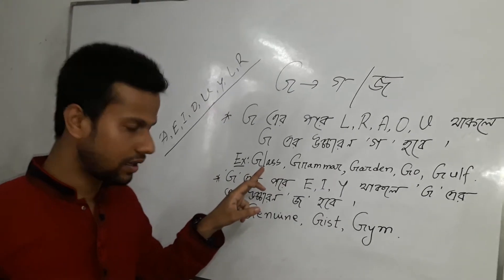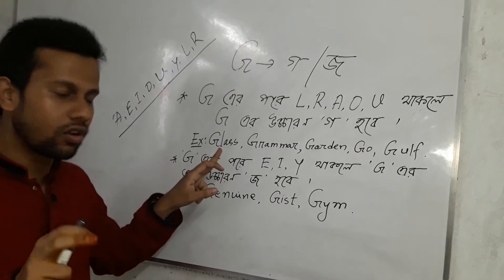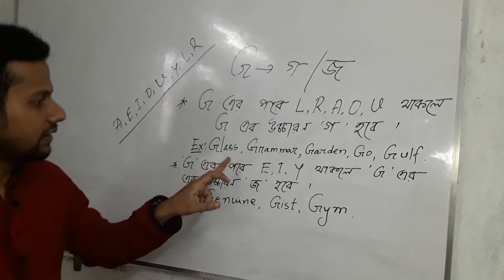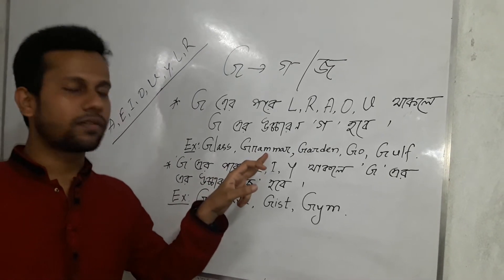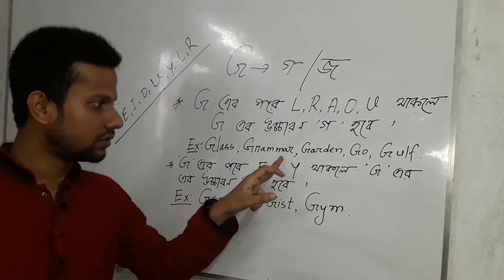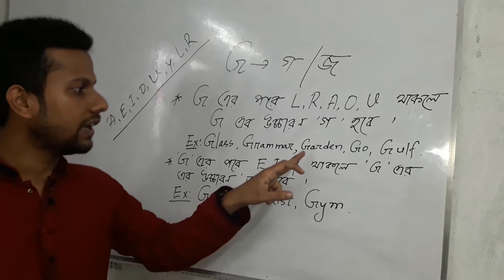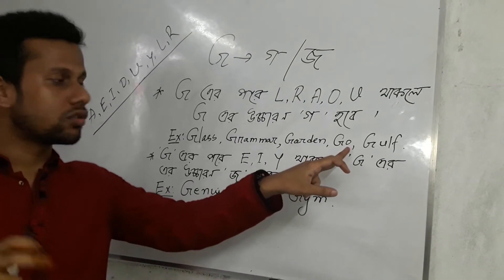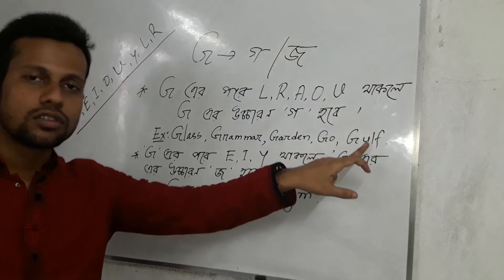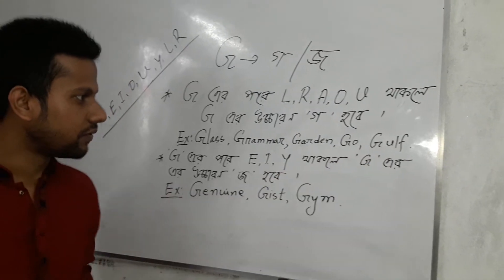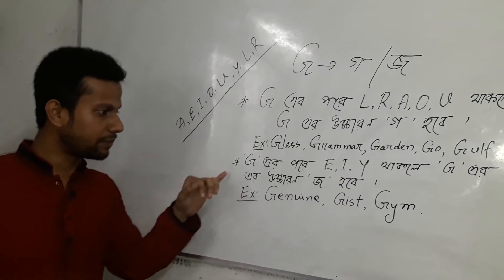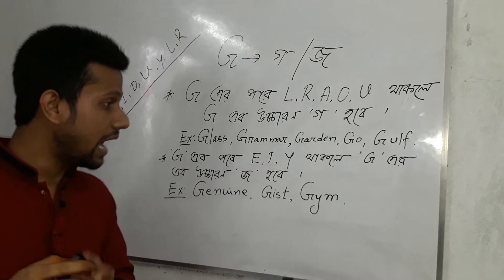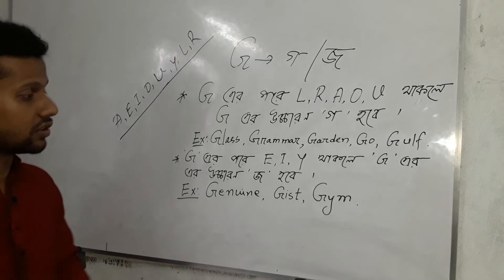After G-L, so 'glass' — not 'jlass'. After G-R, so it's pronounced 'grammar'. After G-A, so 'garden'. After G-O, so 'go'. And after G-U, so 'golf'. These all use the hard 'Go' sound.